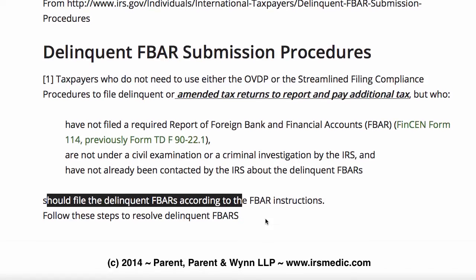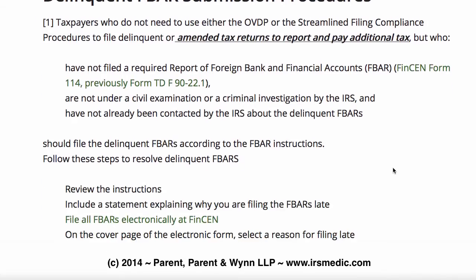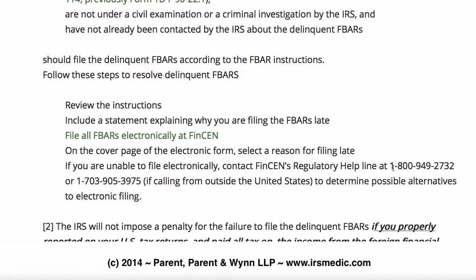Follow these instructions. So that seems pretty straightforward — if you do have unreported income from, say, four years ago, but not in the past three years, you could just file delinquent FBARs and be done with it.